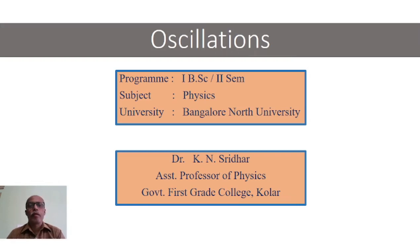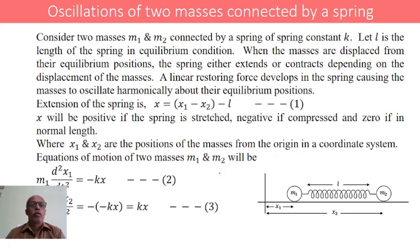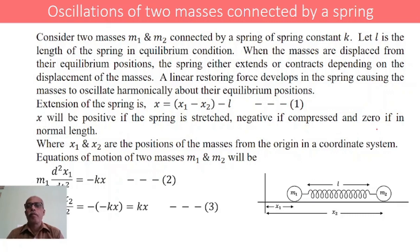Good morning. We are now discussing the oscillations of two masses connected by a spring. We consider two masses m1 and m2 separated by a certain distance l, connected by a massless light spring of spring constant k. Here l is the length of the spring in its equilibrium position when there is no stretching or contraction.